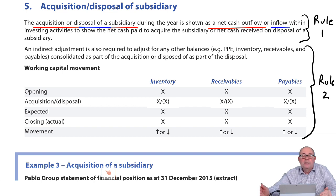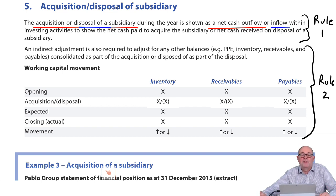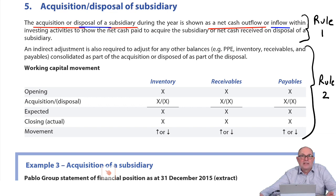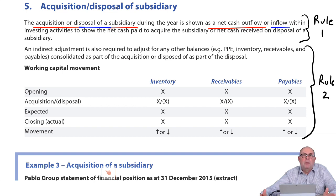When you buy a subsidiary, two things change. First of all, you spend some money — that is a big outflow of cash. Secondly, when you go to collect your subsidiary, you find that alongside other assets like PPE, receivables and so on, you've also bought some cash, because you're buying all of the net assets of the subsidiary company. I'll show you a working you can use when you buy or sell a subsidiary.